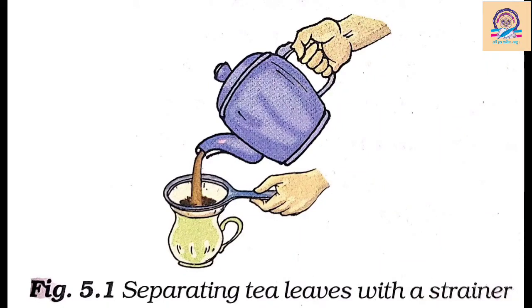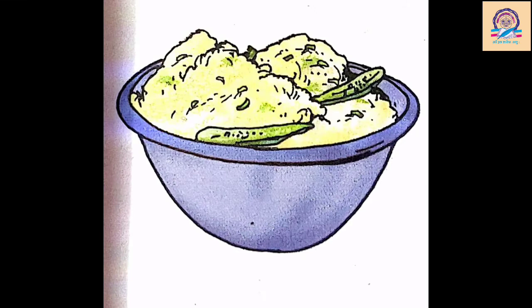In the textbook they have given different examples, starting with the example of tea leaves. When we drink tea, we separate the tea leaves with the help of a strainer — in Hindi we call it channi, and in Gujarati we call it garni. It is used to separate tea leaves from tea, so we can use the tea to drink and tea leaves as medicine.